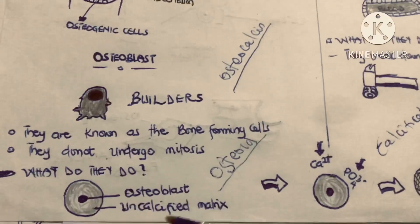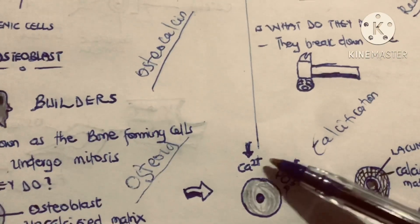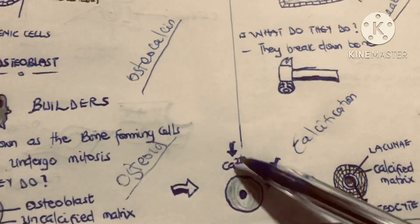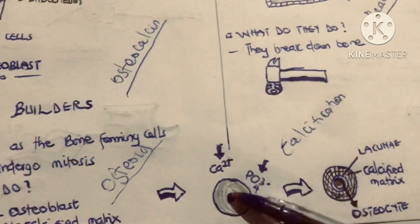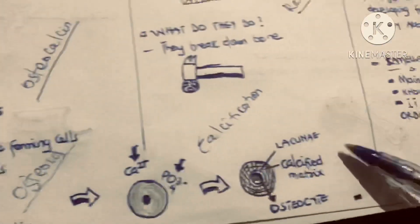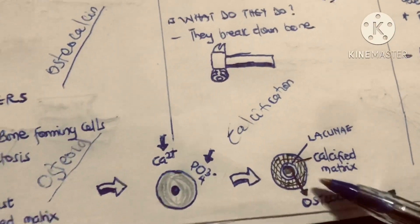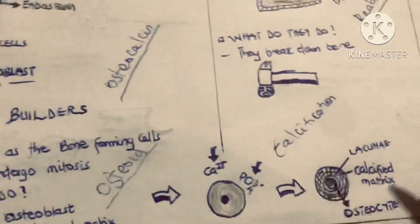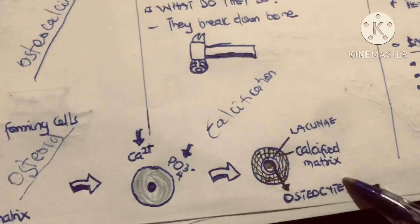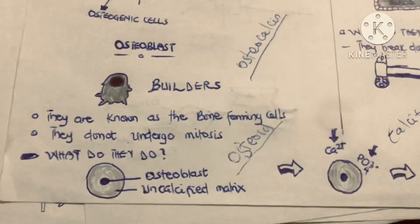After the secretion of this uncalcified matrix called the osteoid, there will be deposition of inorganic ions — calcium and inorganic phosphates. After the deposition of these inorganic ions, the bone matrix becomes calcified. Once calcified, the osteoblasts become trapped in the calcified matrix and they change into cells we call osteocytes.